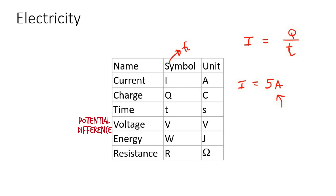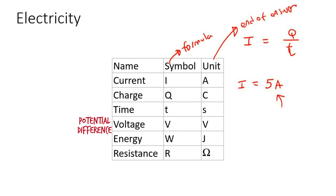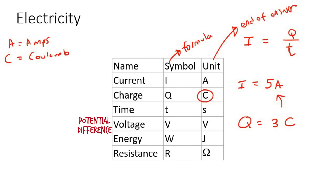The symbol is what you use in the formula, and the unit is when you are giving the answer — you put it at the end of the answer. The next one is charge. For charge, we use a Q. And when you are giving the answer, you would use a C for Coulomb. So for example, you would say that the charge is equal to three Coulombs.